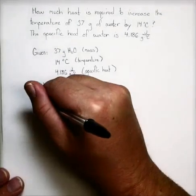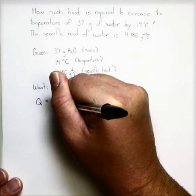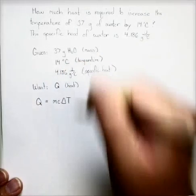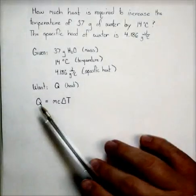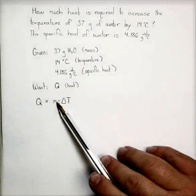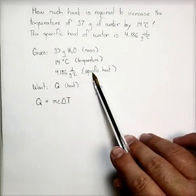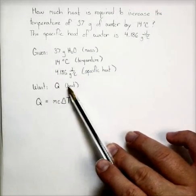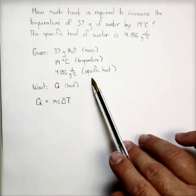Our equation in this case, Q equals M C delta T. And let's take a second to go over what all this means. Q is heat. M is mass. C is specific heat. So again you need to know these. Know that Q is the abbreviation for heat. Know that C is the abbreviation for specific heat.